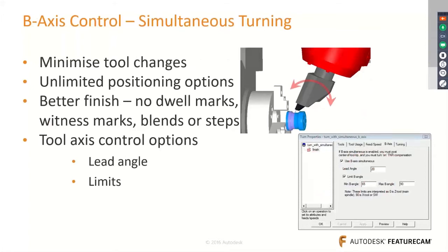Inside FeatureCAM, you can move the B-axis simultaneously during a turning operation, with major benefits including minimizing tool changes and achieving better surface finishing.